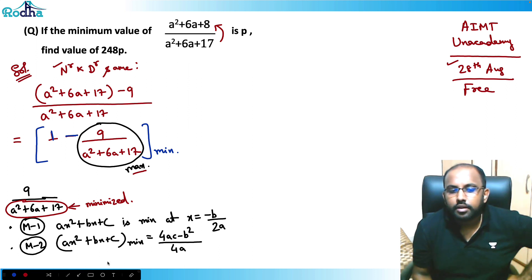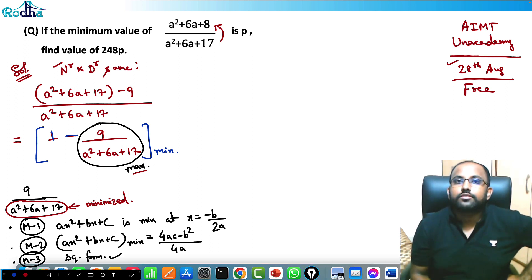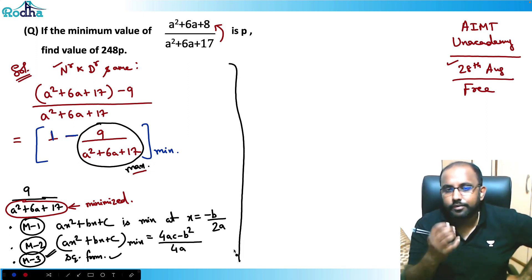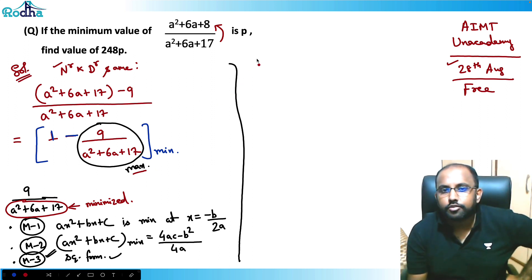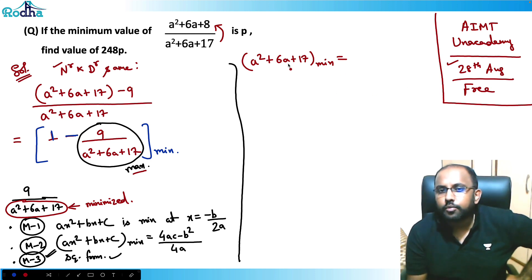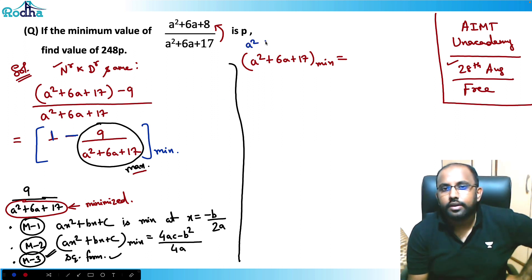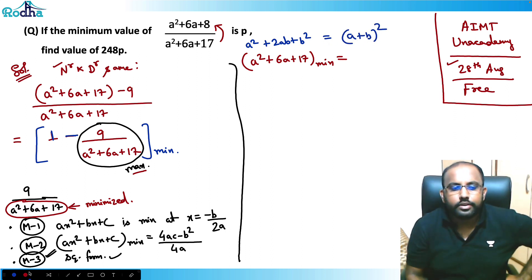Method 3 is converting the quadratic into perfect square form, which is the approach I'll use here. I want to minimize A² + 6A + 17. The perfect square form is (A + B)² = A² + 2AB + B². Comparing 2AB = 6A gives B = 3, so the perfect square part becomes (A + 3)².